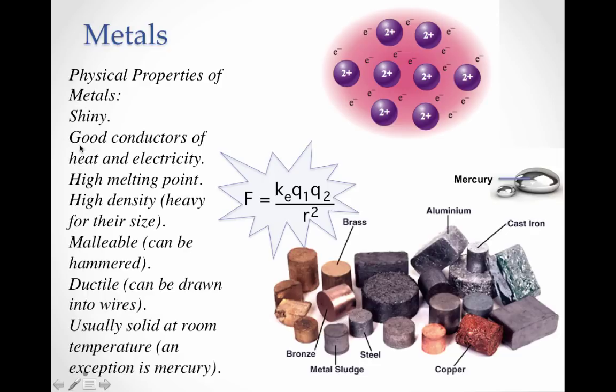They're shiny. They're good conductors of heat and electricity because the electrons can move about readily and carry electricity easily. They have a high melting point—there are very strong electromagnetic forces in between so they don't melt easily. They have high density. They're packed in very closely together because the electrons between them allow them to pack closely together.